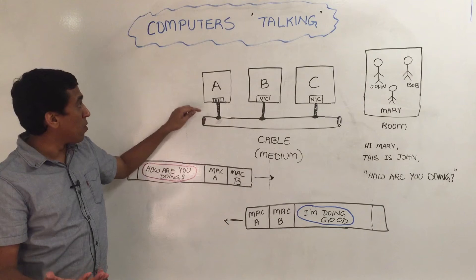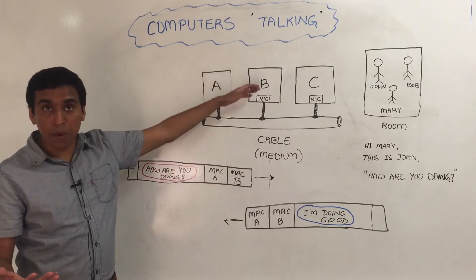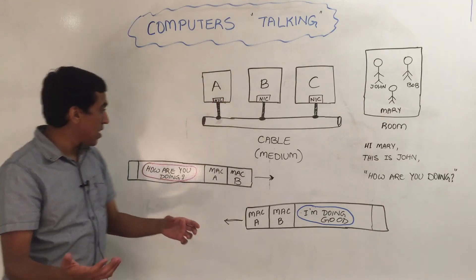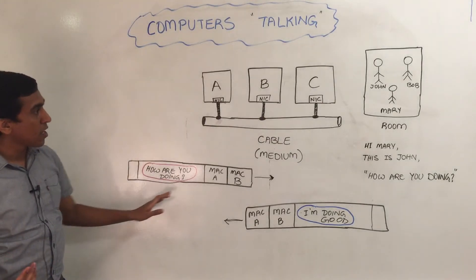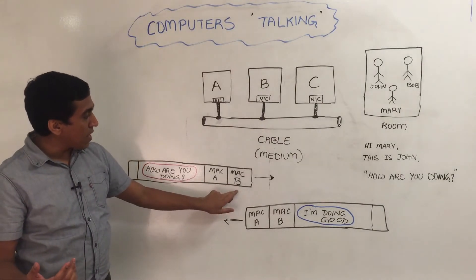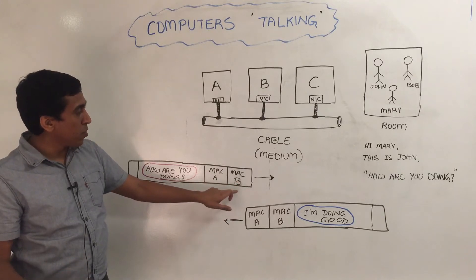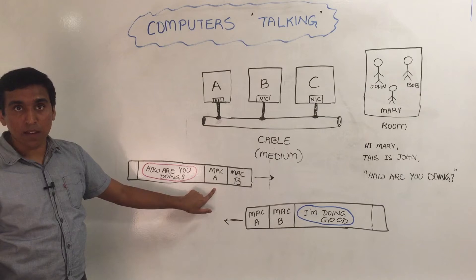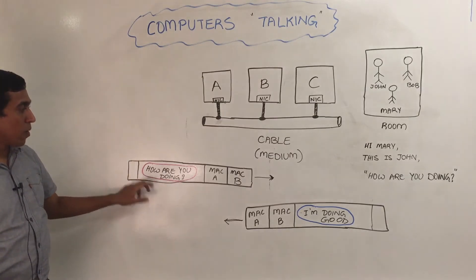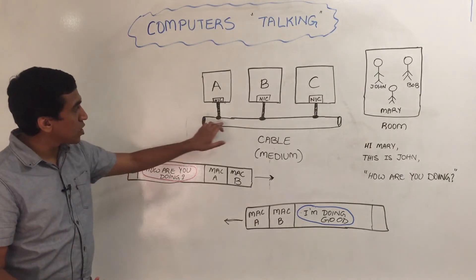Now let's say if A wants to talk to B, what A does is it sends a message to B which looks similar to this: 'Hey B' (you use the MAC address to address B), 'this is A talking, and here is my message: how are you doing?' Now when this message is put on this medium, everybody on this medium can listen to it.